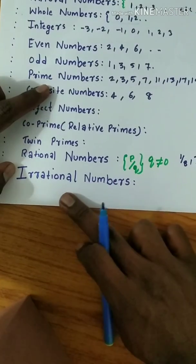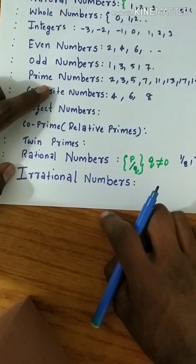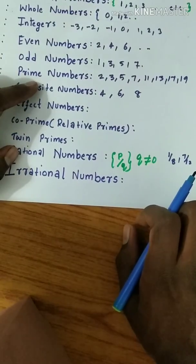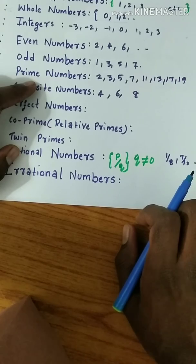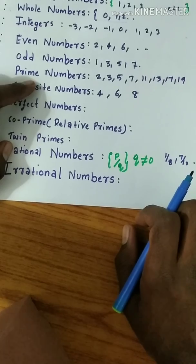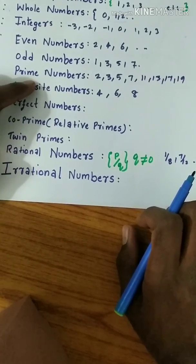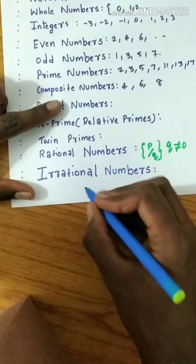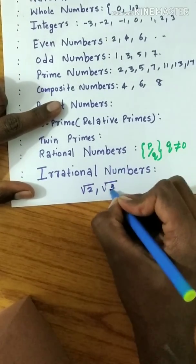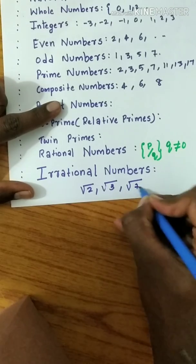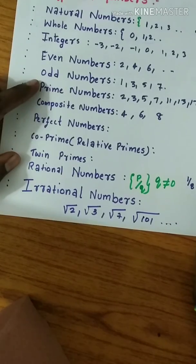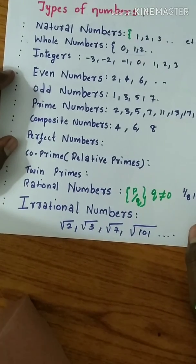Irrational numbers - numbers which when expressed in decimal form are non-terminating and non-repeating. Examples: √2, √3, √7, √101, and so on. Thank you guys, please subscribe.